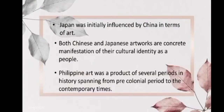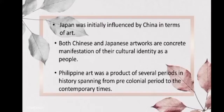Japan was essentially influenced by China in terms of art. Throughout its history, Japanese art has relied heavily on forms and techniques borrowed from China. Rare examples of wall painting in the Golden Hall at Horyoji near Nara in the early 18th century were based on China's Horyoji sculpture. Later on, they opened themselves to the Western world, allowing for the fusion of East and West. Both Chinese and Japanese artworks are concrete manifestations of their cultural identity as a people.